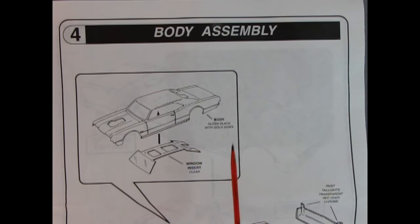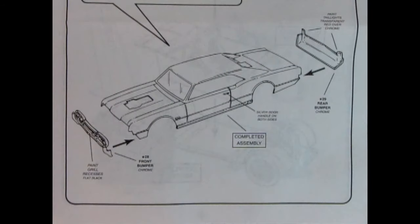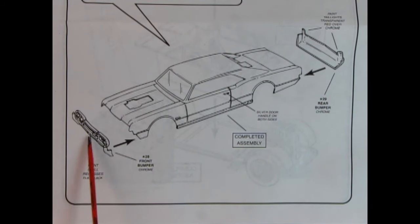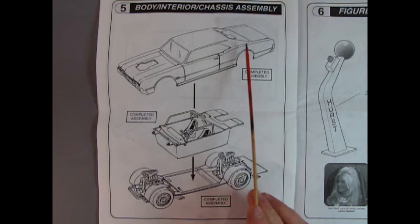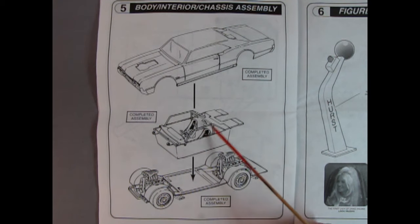Panel four shows the body assembly. Paint the body gloss black with gold sides, then install the window once the paint is dry. Once you get the window glass installed, add the rear bumper and front grille and bumper. Always remember you want plastic to plastic contact, so put in the bumper and check where it contacts the body. Scrape off the paint on the body and chrome around the grille where it's going to be glued, just on the gluing surfaces. Add a little glue and squish it in and let it dry. Panel five shows the body, interior, and chassis assembly. The completed body goes down onto the completed interior, which all goes down onto the completed chassis.